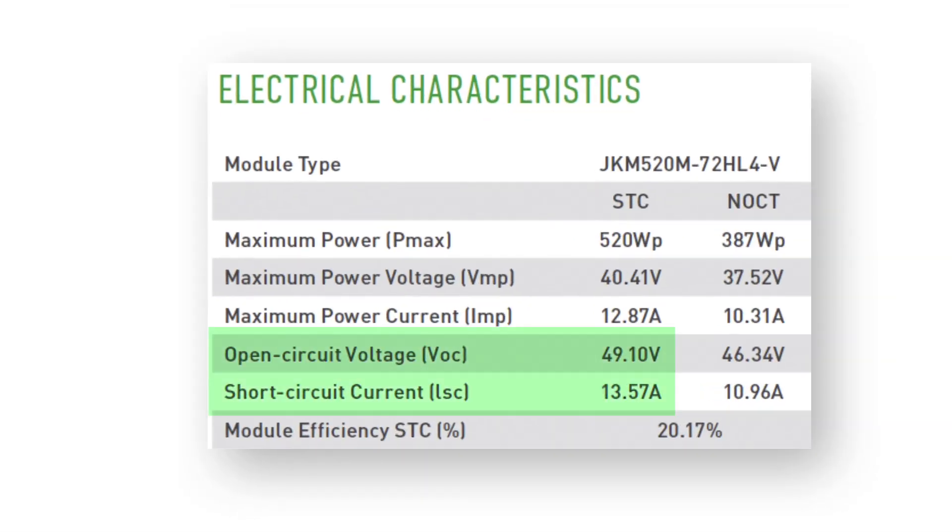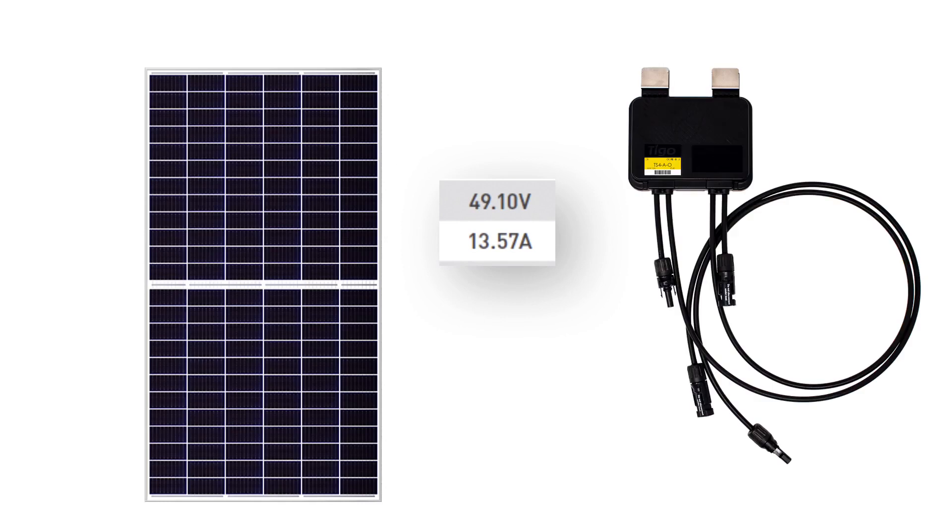We must use the VOC and ISC values from the datasheet since they represent the worst-case scenario of voltage and current that could ever enter the TS4 terminals from the PV module.